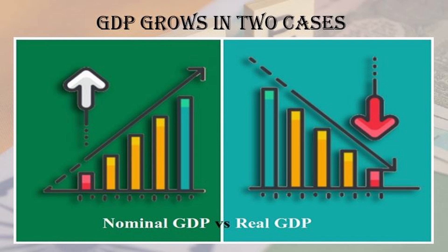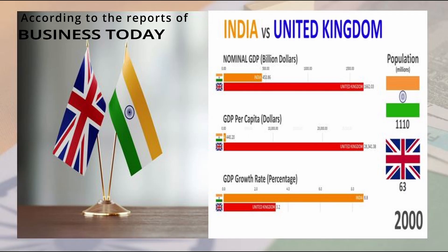GDP grows in two cases. The first is real GDP — it is a way of measuring a nation's output in terms of the value of its goods and services, investment, government spending, and exports, with the prices of the base year. The second is nominal GDP — it is a way of measuring the value of all goods and services produced by an economy at current market prices in a financial year.